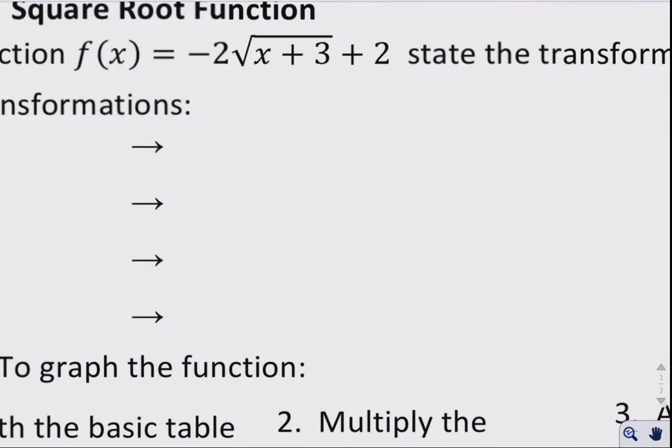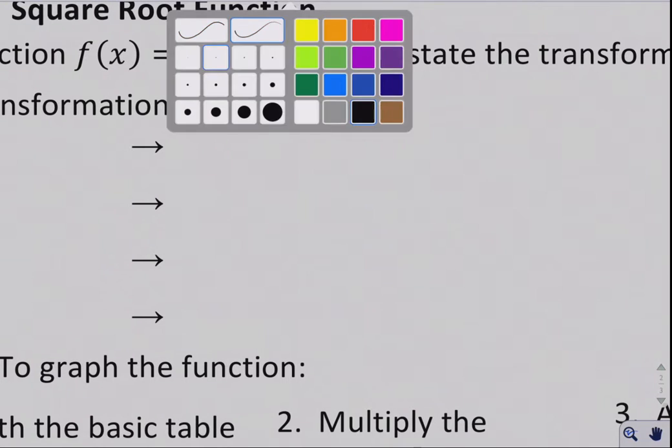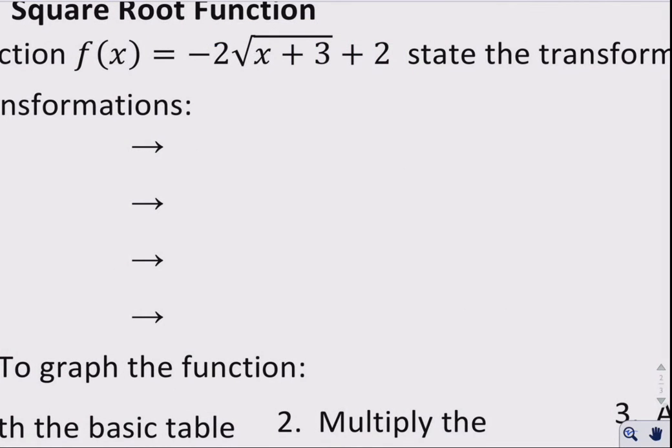So what do we have going on here? Well, the negative means that we have a reflection in the x-axis. So reflection in the x-axis. The 2 means we have a vertical stretch.